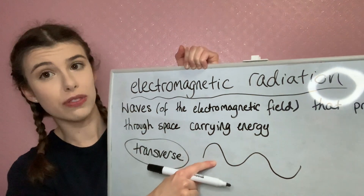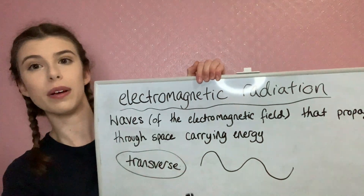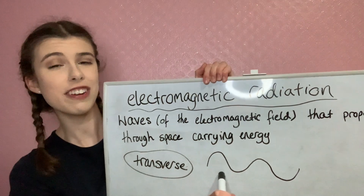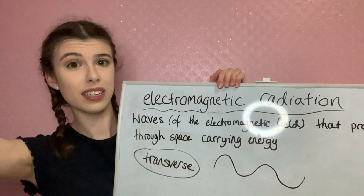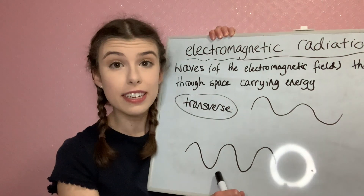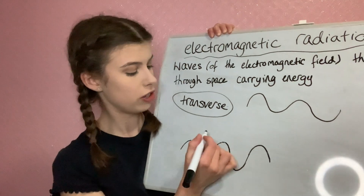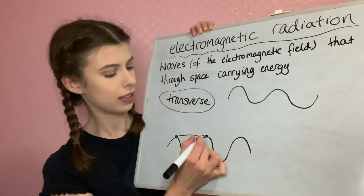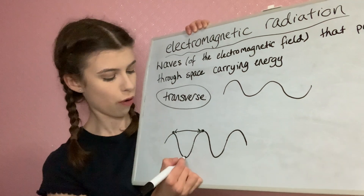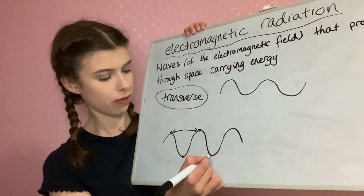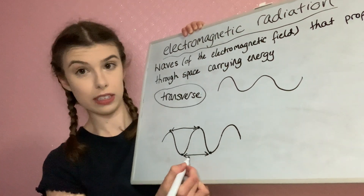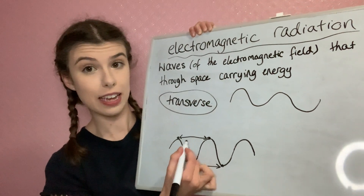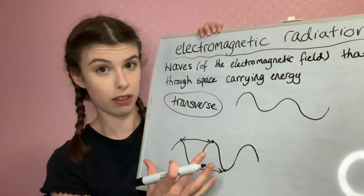This is what a transverse wave looks like — just imagine a wave like this carrying energy through space. Electromagnetic waves have a wavelength, which is defined as the distance from one peak to the next peak, or from one trough to the next trough. This distance here, or equivalently this distance here, is called the wavelength.